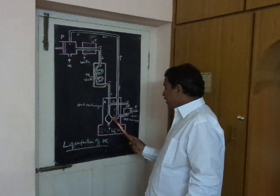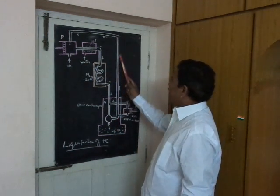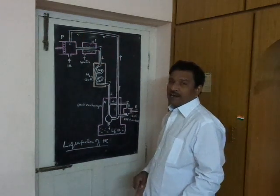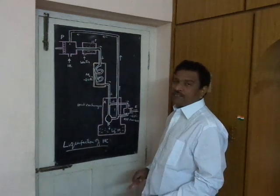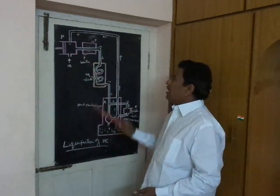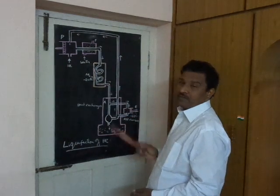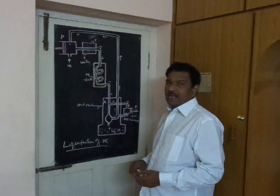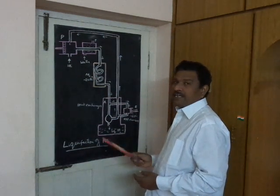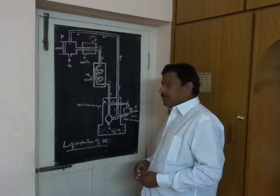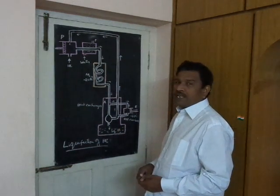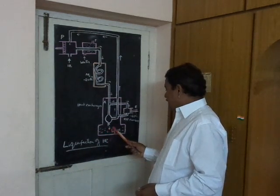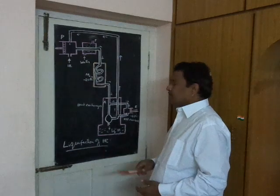The unliquefied gas is again fed back into the compressor, compressed to high pressure, and the process is repeated. After a few cycles of this regeneration process, the helium is liquefied and the liquefied helium can be collected at the bottom of the heat chamber.